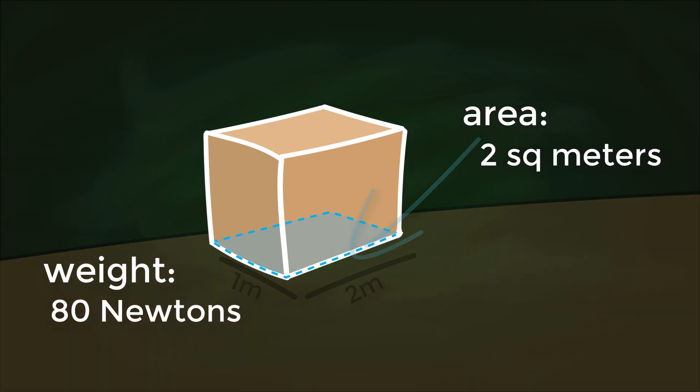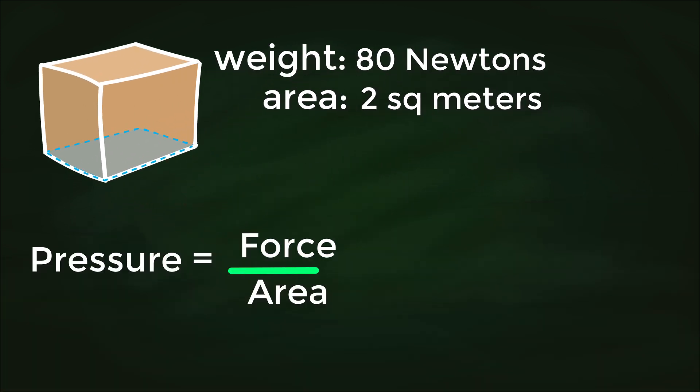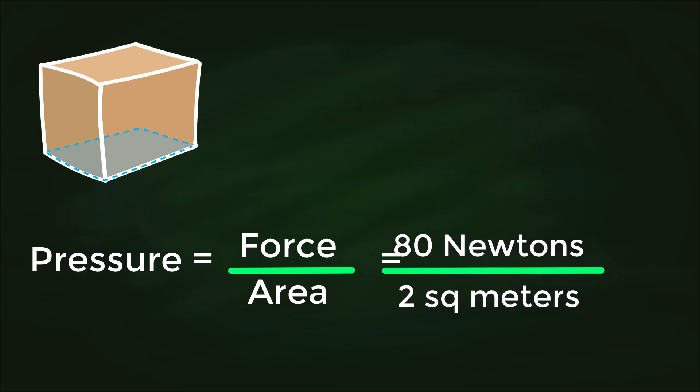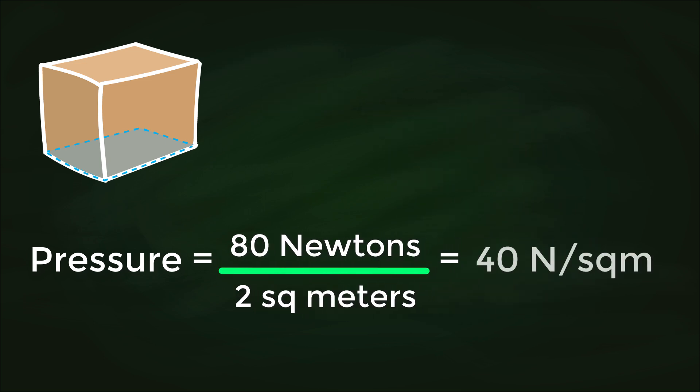Now if we substitute those values into our formula, we can work out that the pressure exerted by the box on the table is 80 newtons divided by 2 square meters, which equals 40 newtons per square meter.